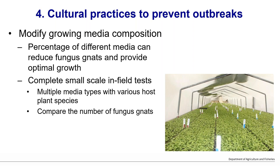It is also worth modifying your growing media composition. Reducing the amount of peat is recommended unless you can be sure it doesn't contain plant pathogens — peat has been found to come complete with Pythium in some cases. Different media compositions can reduce fungus gnat populations, though results are not consistent across plant species. Try multiple treatments, compare the number of fungus gnats by monitoring with yellow sticky traps, and determine what works best for your plants and environment.